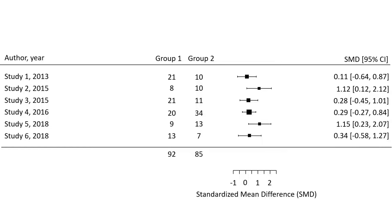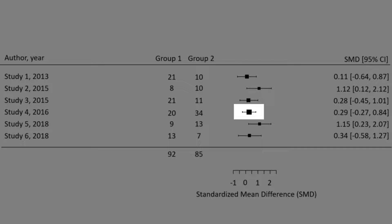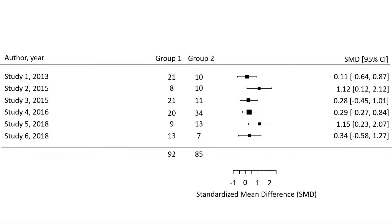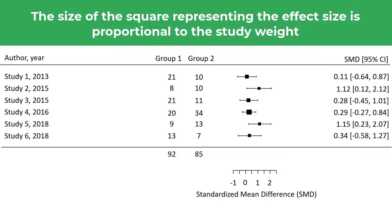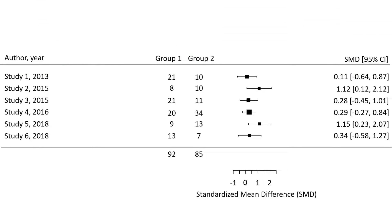One thought that may come into your head at this point is: why are some of the squares bigger than others? Just look at the square for study 4 and how much larger this is than the rest. This is because the size of the square representing each effect size is proportional to its weight in the analysis. I'll go on to talking about study weights shortly.